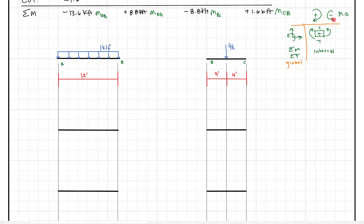Wherever we have a negative value in the moment distribution results, we know that moment is really going to be counterclockwise. So I can come in here and write a counterclockwise arrow for our 13.6 kip-feet, dropping the negative sign because the arrow is now in the right direction. I knew it was counterclockwise because of the negative, but now I'm jumping to the global sign convention. If that's confusing, we'll get to the sum of moments in a second and it should clear things up.